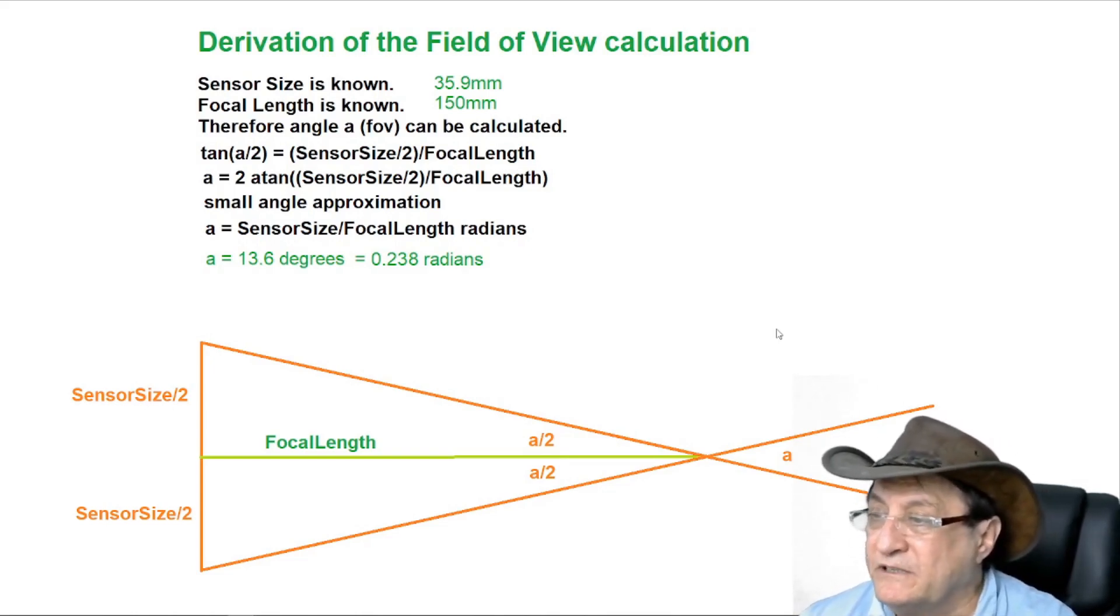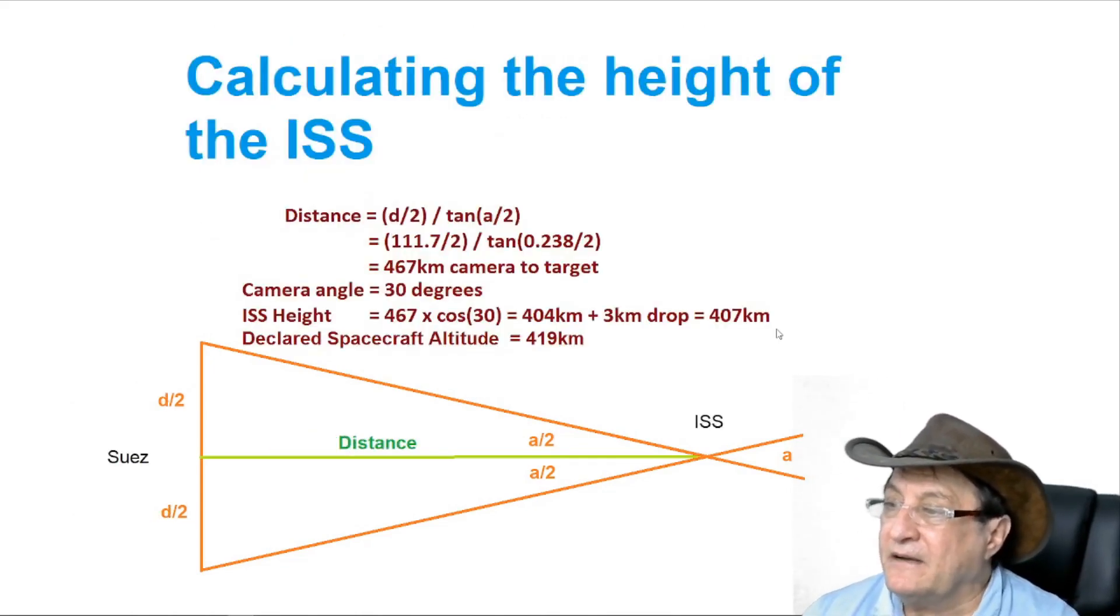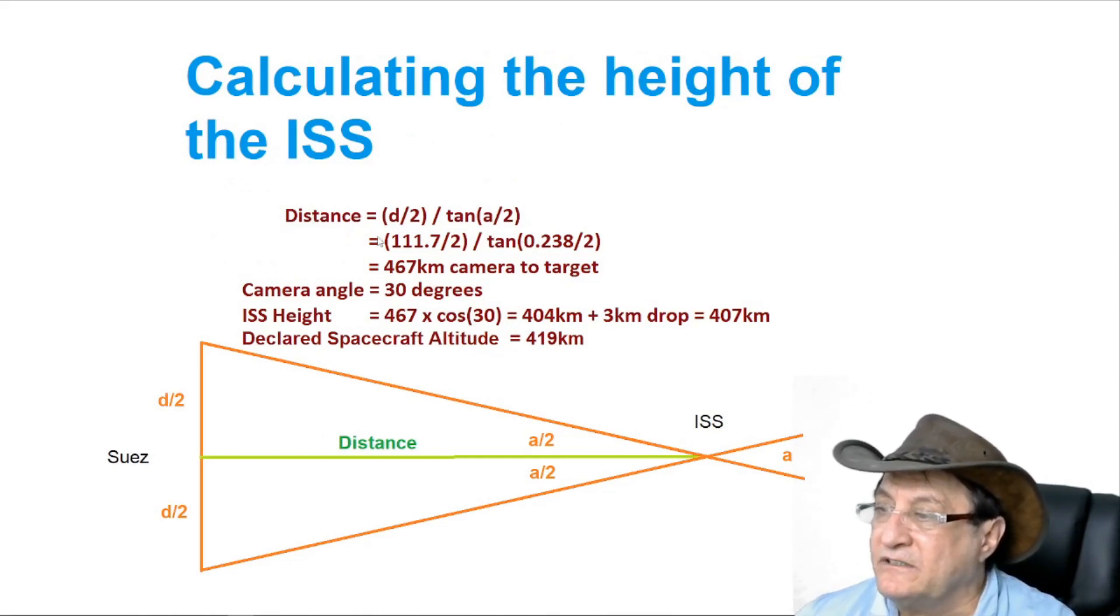And then now we calculate the height of the ISS. The ISS, we won't use the approximation this time, we'll calculate it all out. We'll use one of these triangles here and we come up with the ISS height of 407 kilometers. This one also has a bigger angle because it's 30 degrees there, which is remember, it's about 208 kilometers horizontally from the Suez Canal. So we've calculated 407 and the declared spacecraft altitude is 419 kilometers, all very close.